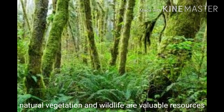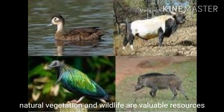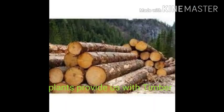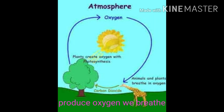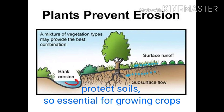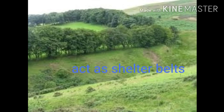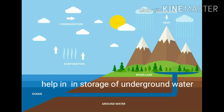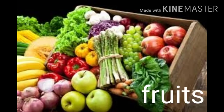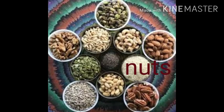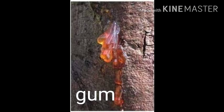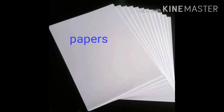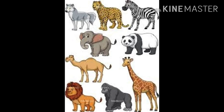Natural vegetation and wildlife are valuable resources. Plants provide us with timber, give shelter to animals, produce the oxygen we breathe, protect soil, are essential for growing crops, act as shelter belts, help in storage of underground water, and give us fruits, nuts, latex, turpentine oil, gum, medicinal plants, and also the paper that is so essential for studies.